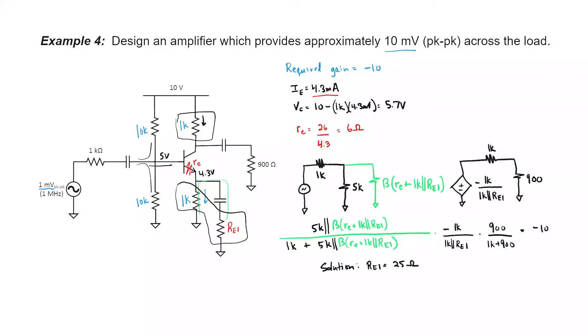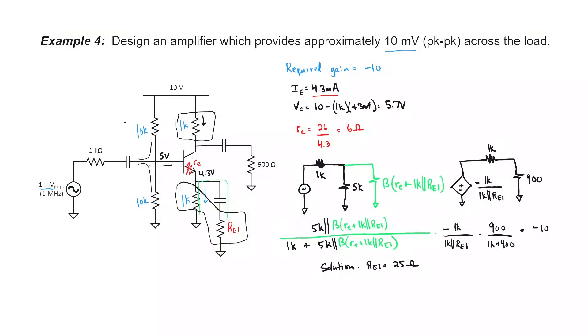Nonetheless, we can still squeeze a gain of 10 out of a single transistor. If our emitter resistor RE1 goes all the way to 0, the gain here is still only 27, so it's going to be hard to get a gain of 50 or 100 out of a single transistor given our source and load impedance restrictions. Let's now choose our capacitors: 1 nF at the input, 10 nF at the output just like before, but I'll bump the emitter bypass up to 100 nF — our emitter resistor here is about a factor of 10 lower than in the last example, so I'll raise the emitter bypass capacitor to compensate.